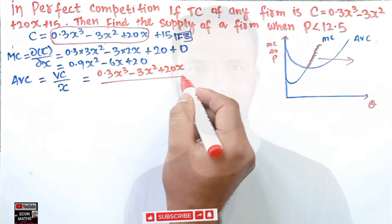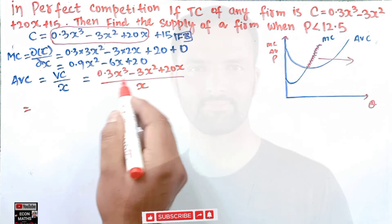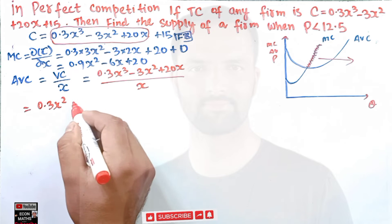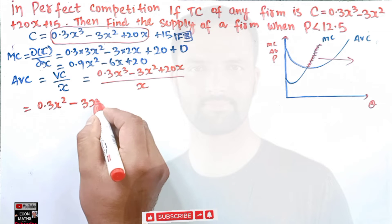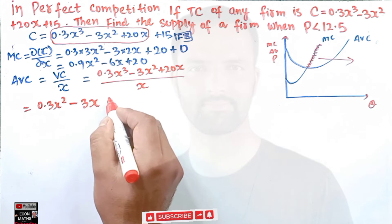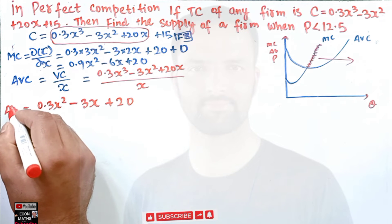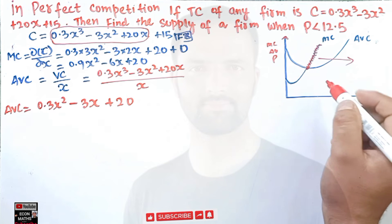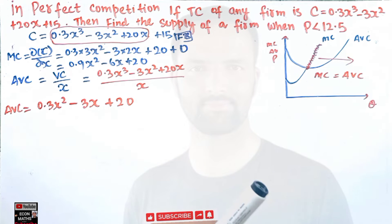Dividing variable cost by x: (0.3x³ - 3x² + 20x) / x = 0.3x² - 3x + 20. So our AVC = 0.3x² - 3x + 20. At this point, we know marginal cost and AVC are equal at the minimum point of the AVC.